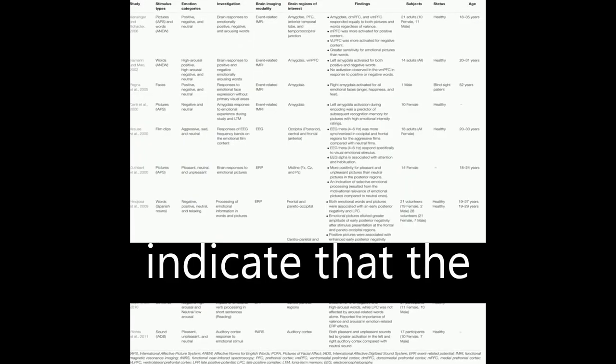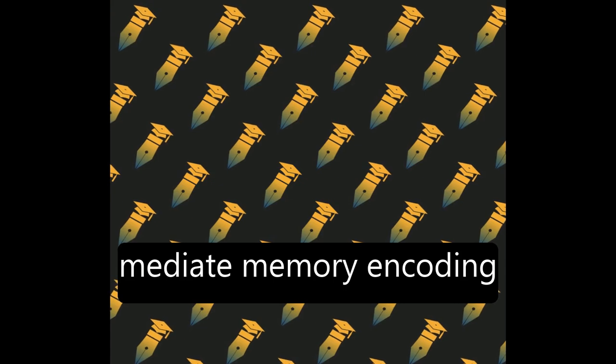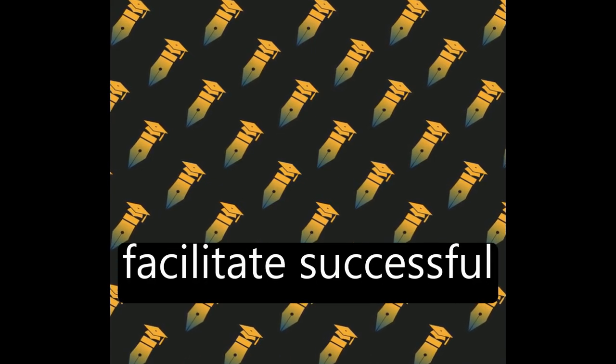Neuroimaging findings indicate that the amygdala, prefrontal cortex, and medial temporal lobe work together to modulate memory consolidation, mediate memory encoding, and facilitate successful learning and LTM retention.